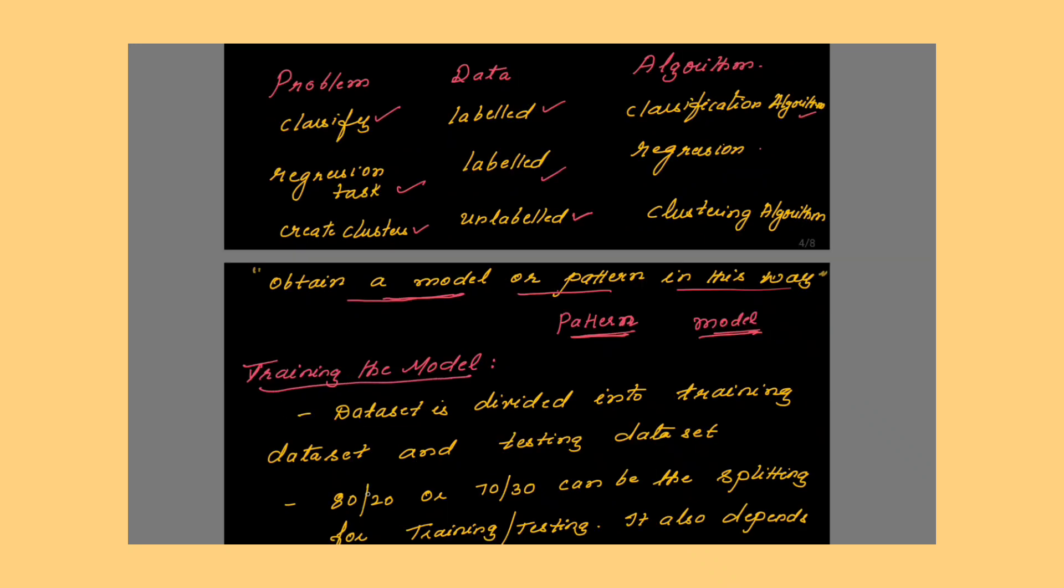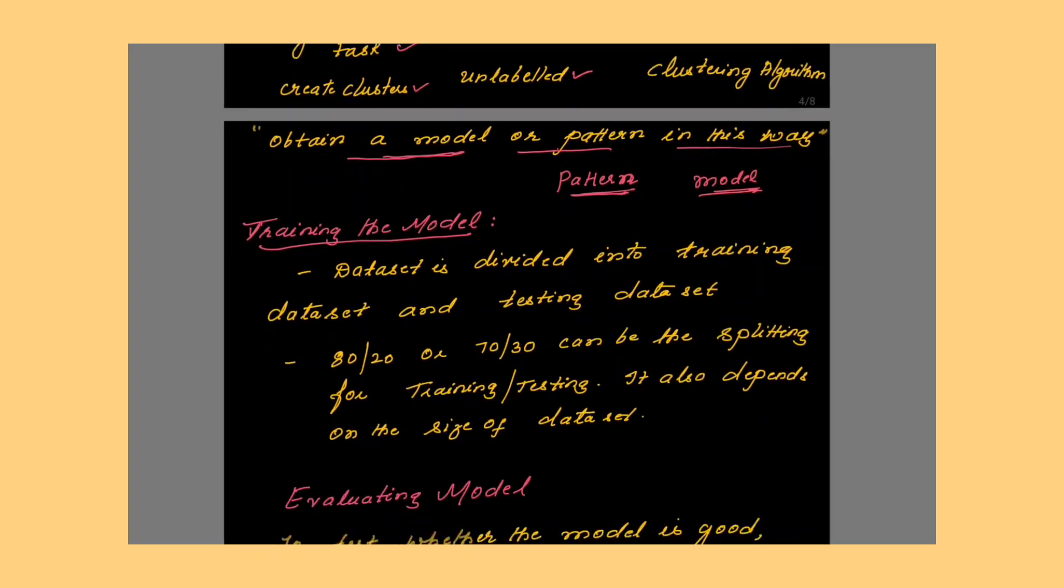The next stage in the machine learning process is training the model. The dataset is divided into training dataset and testing dataset. In training, most of the time you will be using 80% of the data or 70% of the data. Whereas for testing, you may use 20% of the data or 30% of the data. This is generally 80/20 or 70/30 can be the splitting for the training and testing purpose. But definitely it also depends on the size of the dataset. Just look at the size of the dataset, then decide how much percentage you are going to select for training and how much for testing.